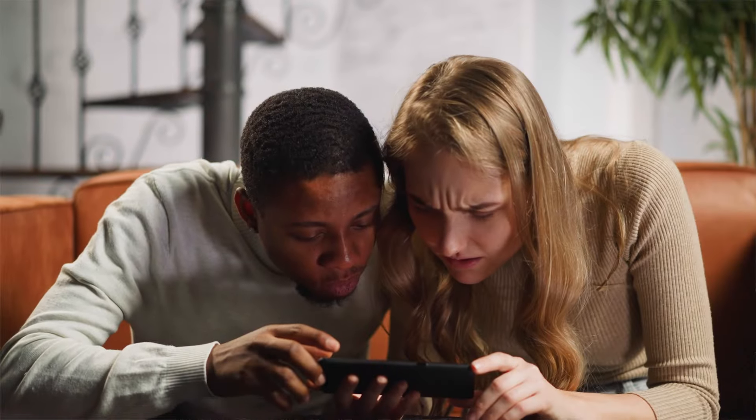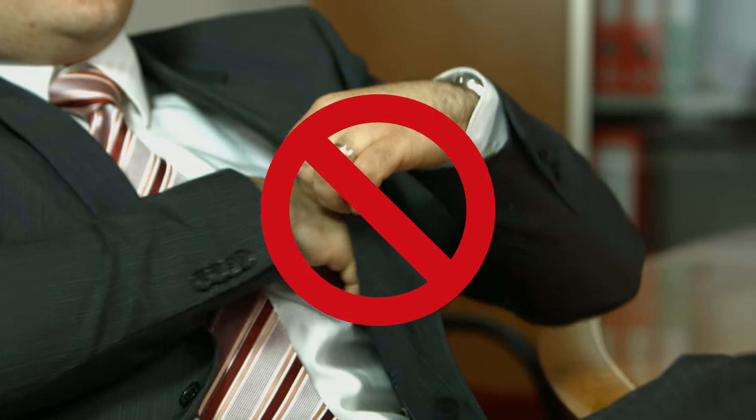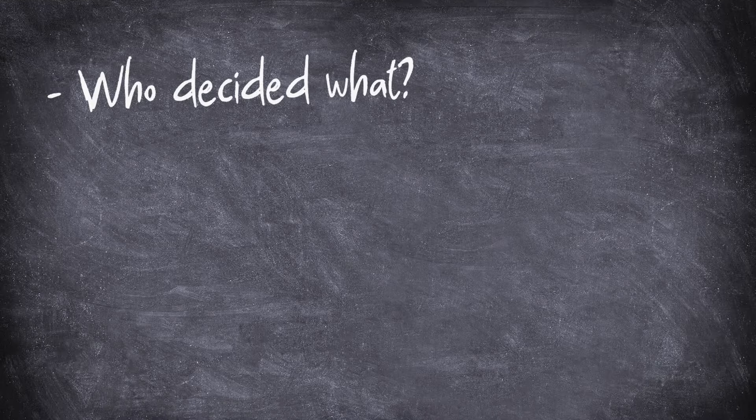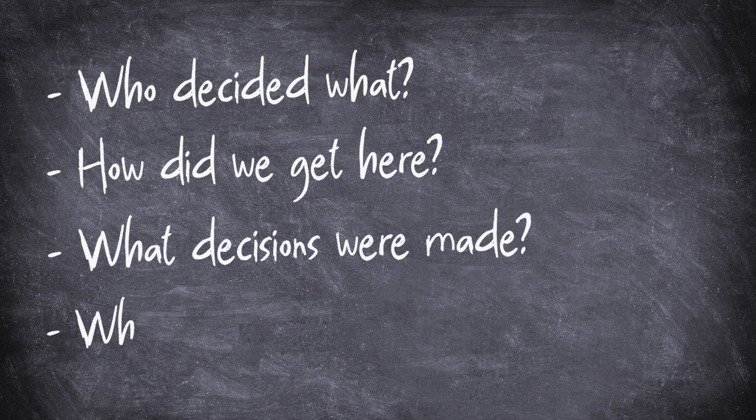I took over my parents' finances — not because they had any dementia, but because we just do it better. When we took it over, we could see the results of decisions that had been made. Their financial advisor looked probably worse than they needed to in retrospect. I'm sure if there had been recordings of those decisions, I would have seen it wasn't necessarily the advisor trying to screw my dad. It would have been nice to go back and see who decided what, double-click into that stuff, and see how we got to where we are and who drove those decisions.